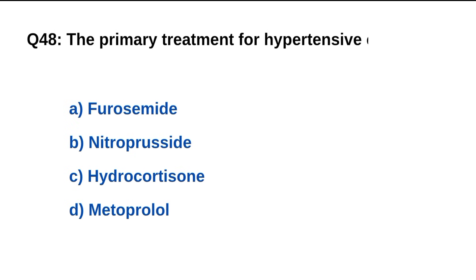Question number 48. The primary treatment for hypertensive crisis is? The right option is B: Nitroprusside.